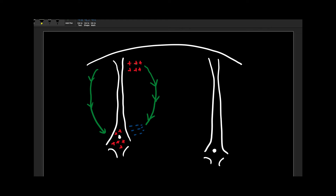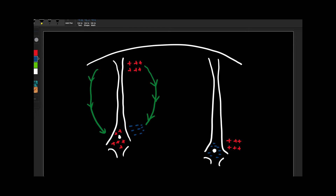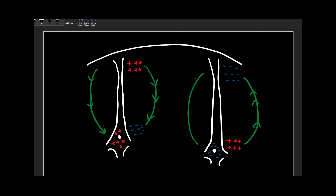Now what happens if there is an inhibitory post-synaptic potential? There will be net negative charges on the inside of the cell, and when there are net negative charges on the inside, there will be relatively more positivity on the outside. The opposite end of this neuron will be relatively more negative. Current starts flowing in the opposite direction compared to an EPSP, and the same happens from the other side.